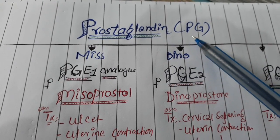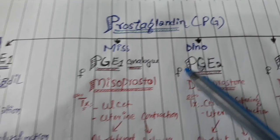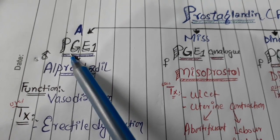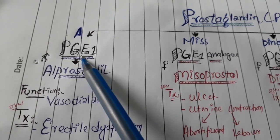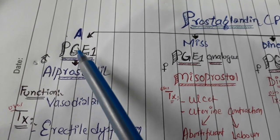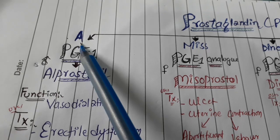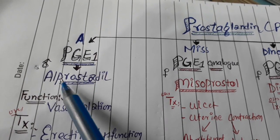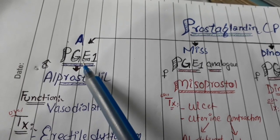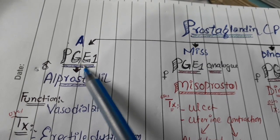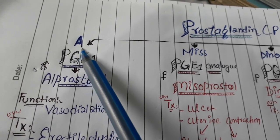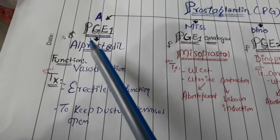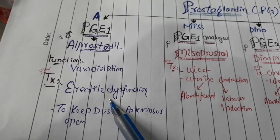Prostaglandin, we simply say PG. There are different variants of Prostaglandin. The first Prostaglandin which should come in our mind is Prostaglandin E1. How we will remember the name? In English, the first alphabet is A, so for Prostaglandin E1, the name will start from A like Alprostadil. The first alphabet in English is A, so Alprostadil. The function is vasodilation, so it could be used in male erectile dysfunction and also to keep open the ductus arteriosus.